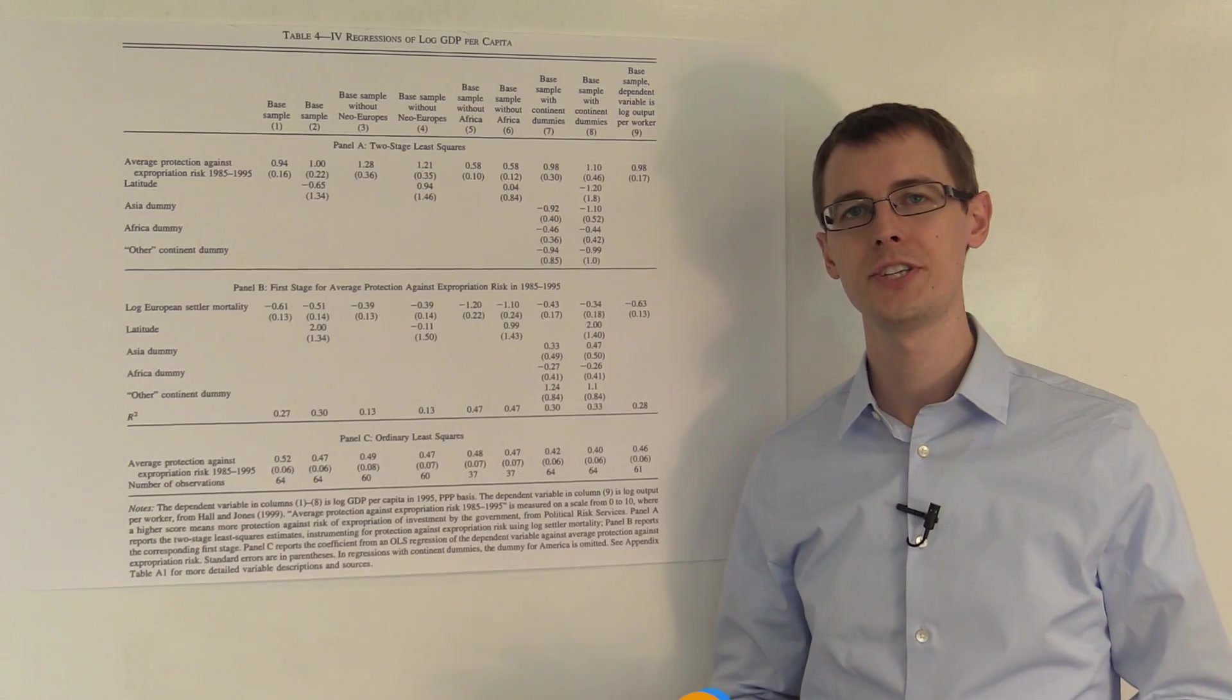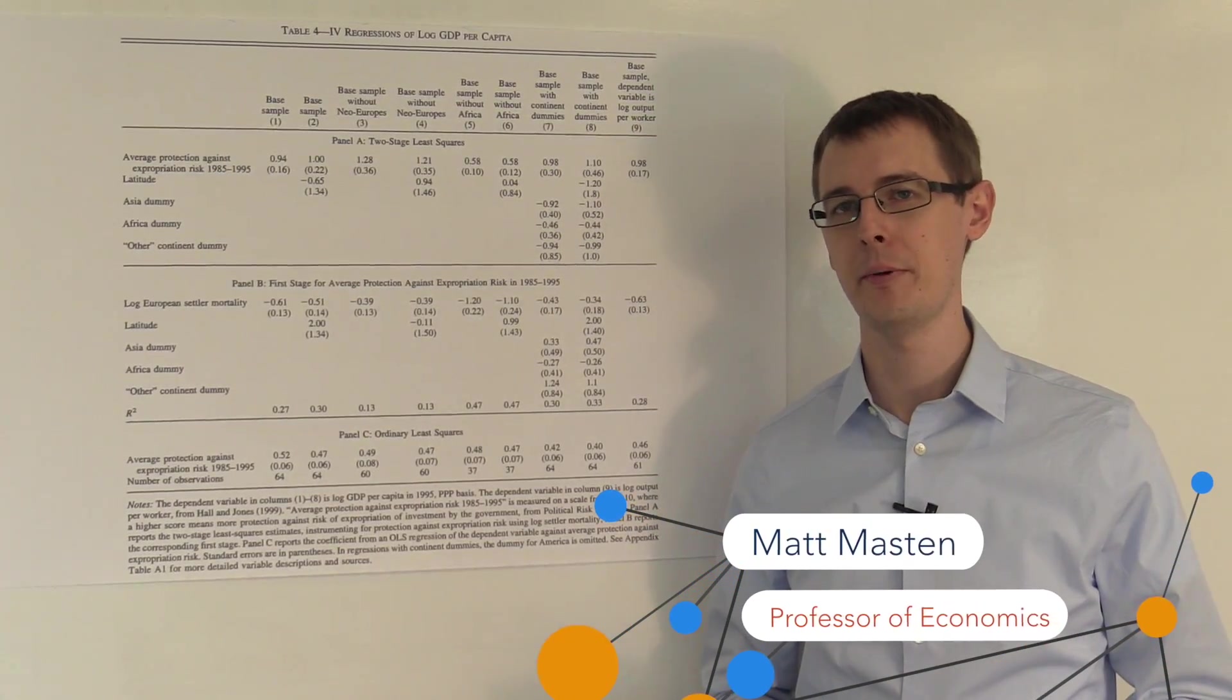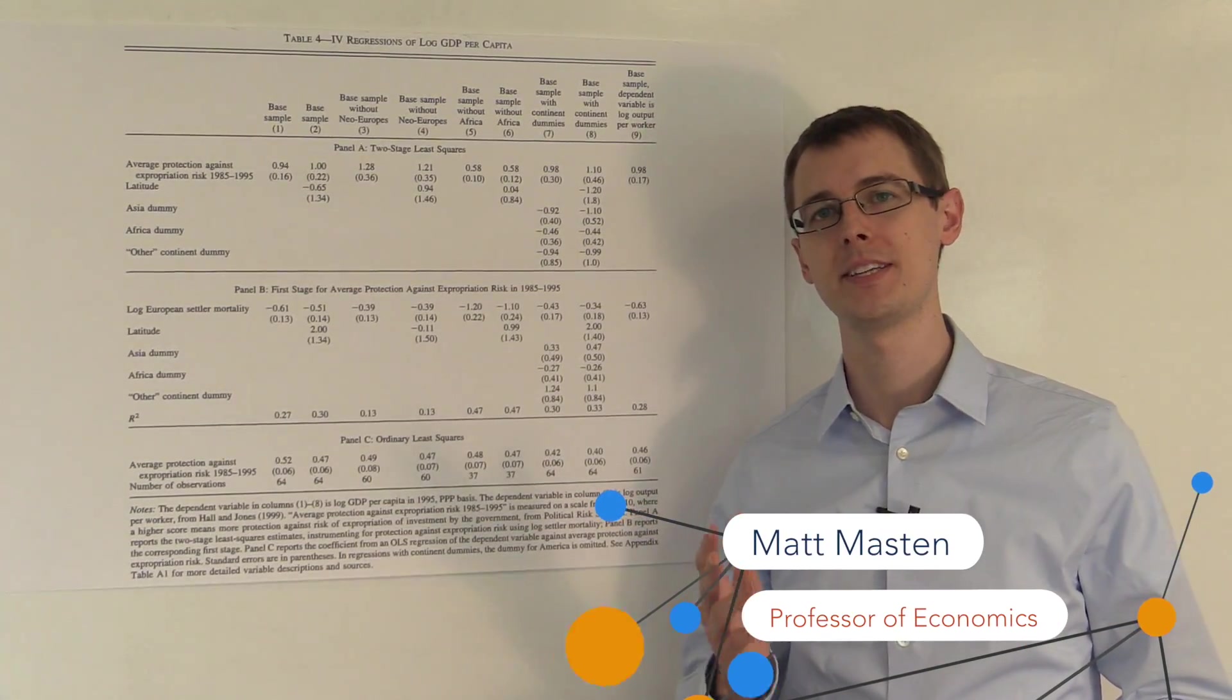Now we're ready to talk about the main results in the Acemoglu, Johnson, and Robinson paper on the effect of property rights on economic development.